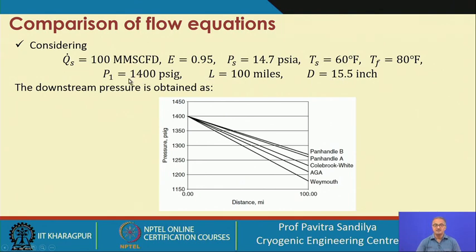Please note that the inlet pressure has been given in terms of gauge pressure. Before using any of the expressions to find the flow rate or friction factor, you must first convert gauge pressure to absolute pressure by adding 14.7 (the ambient pressure). Once you have the absolute pressure, you can use those various expressions to find the downstream pressure.